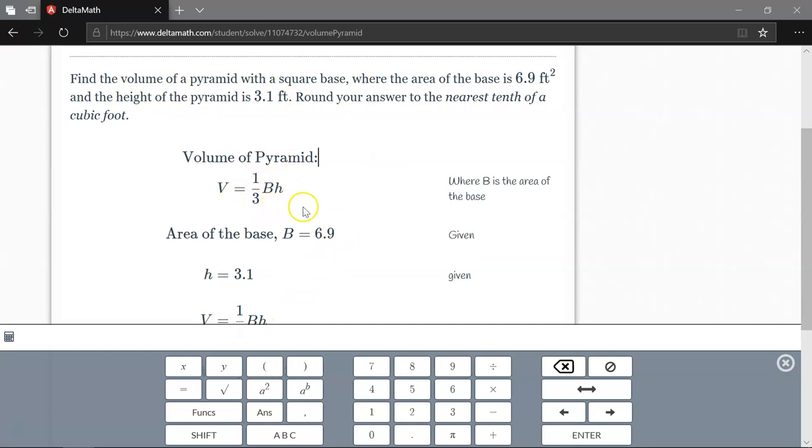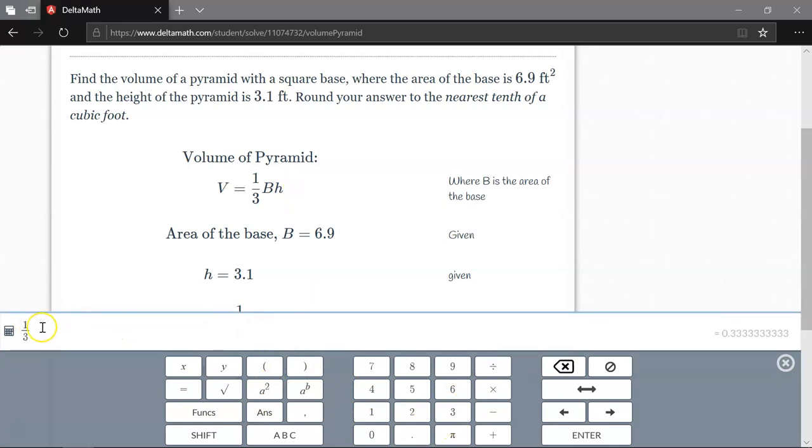Now, again, some people are having some trouble with how do I handle these fractions, etc. I'm just going to type in my calculator, 1 divided by 3, and it creates a fraction. I press the right arrow to come out here beside the fraction. Put in the area of the base, 6.9 times the height, which was 3.1.